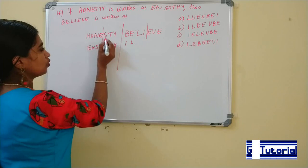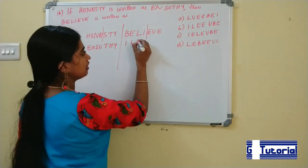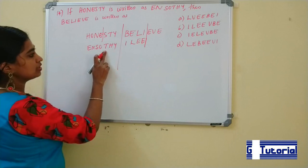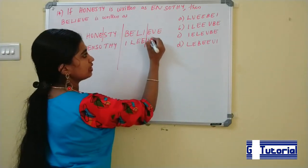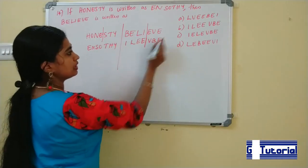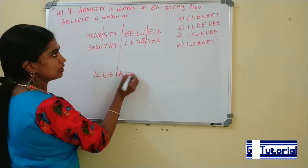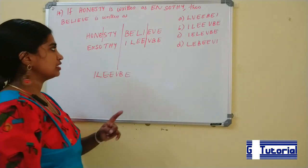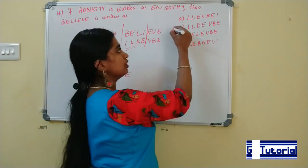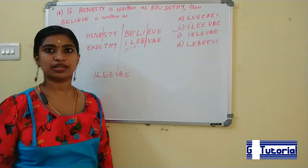Mapping 'believe' using the same code: pin is S for one position, the 5th letter maps to E, 2nd letter maps to E, pin is T. The first letter B maps to a code, last letter E maps. Working through B, I, L, E, V, E — the coded answer for 'believe' is option B: I, L, E, V, B.